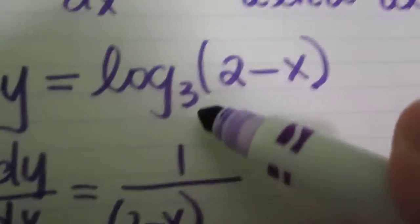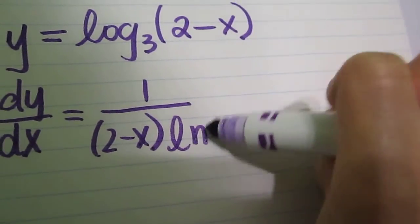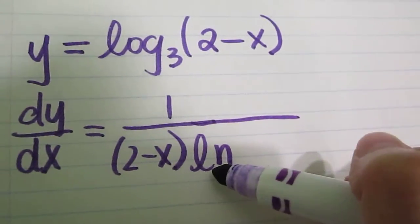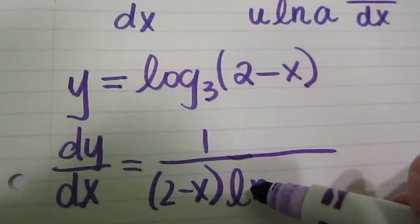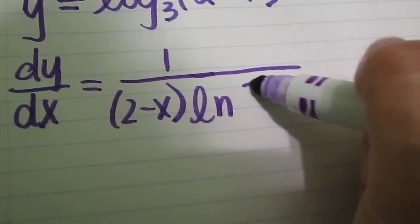Since it's right here, u, so 2 minus x is a quantity, and then it's going to be natural log, not log but natural log, of a. And a is the base, so that's 3.